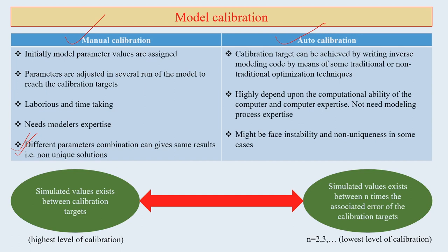In auto calibration, the calibration target can be achieved by writing inverse modeling code using traditional or non-traditional optimization techniques. It highly depends on the computational ability of the computer, and the person running the calibration must have expertise in computer operation and behavior. However, even without prior modeling expertise, one can carry out auto calibration.